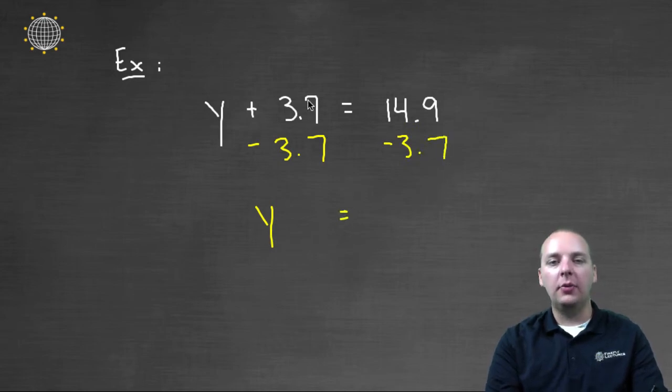So let's also decrease the right hand side by three point seven at the same time. And Y, when these cancel, plus three point seven minus three point seven, Y would equal eleven point two, if we subtract these two guys here, fourteen point nine,